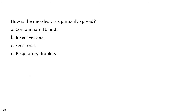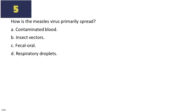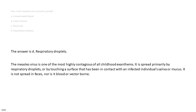How is the measles virus primarily spread? A. Contaminated blood. B. Insect vectors. C. Fecal-oral. D. Respiratory droplets. The answer is D. Respiratory droplets. The measles virus is one of the most highly contagious of all childhood exanthems. It is spread primarily by respiratory droplets, or by touching a surface that has been in contact with an infected individual's saliva or mucus. It is not spread in feces, nor is it blood or vector-borne.